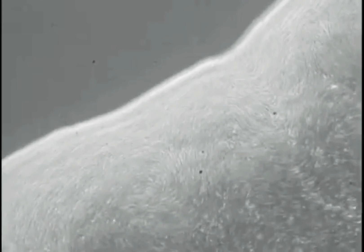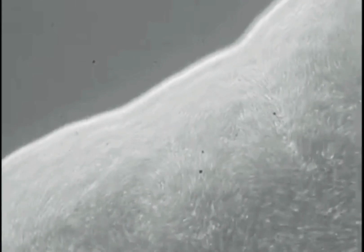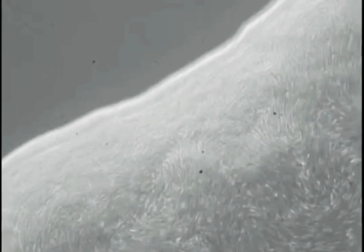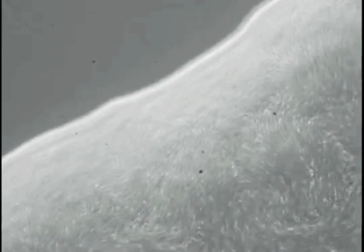Swarming motility in Proteus mirabilis. Proteus mirabilis is a gram-negative, facultatively anaerobic, rod-shaped bacterium. It shows swarming motility.